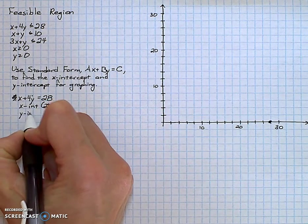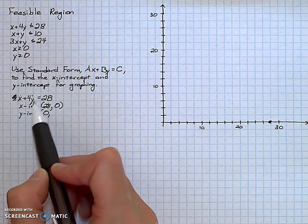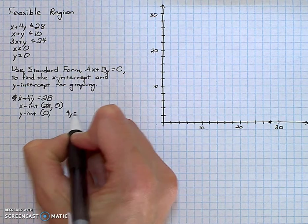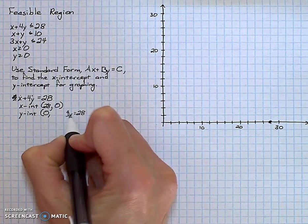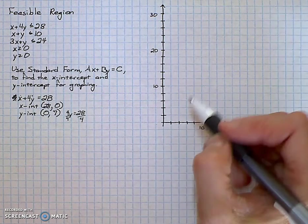The y-intercept occurs when the x-value is 0. I replace x with 0. I have 4y equals 28. So I divide by 4 and arrive at a y-value of 7. The y-intercept is 7.